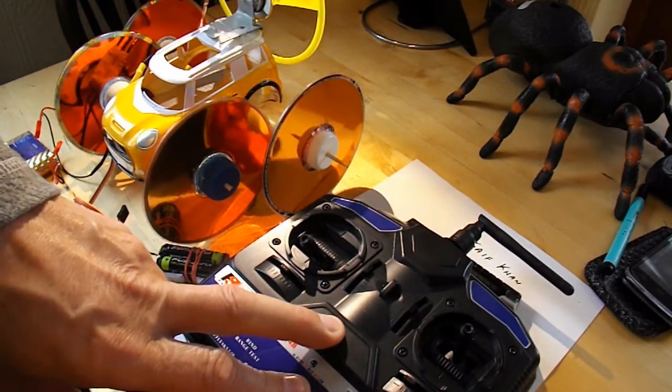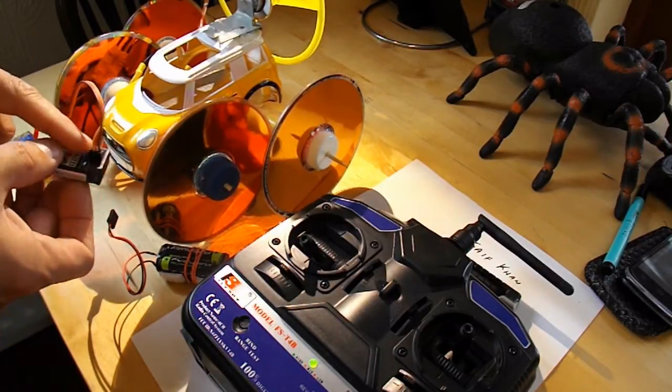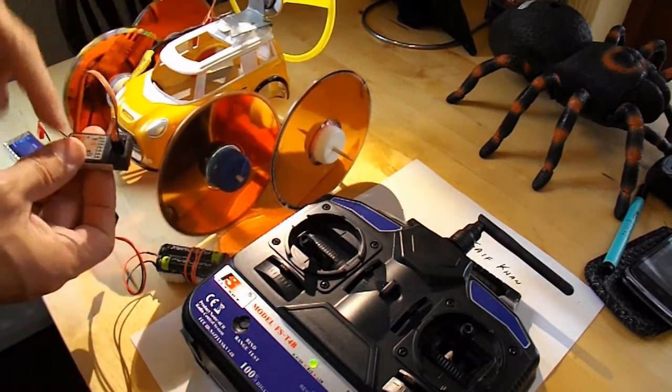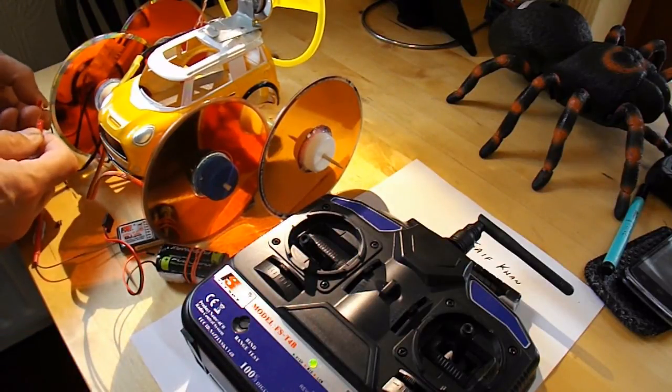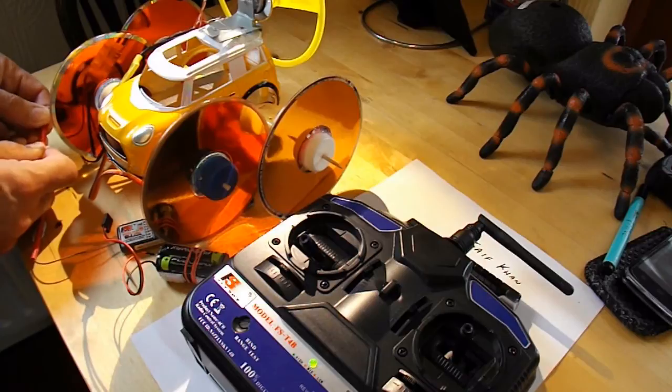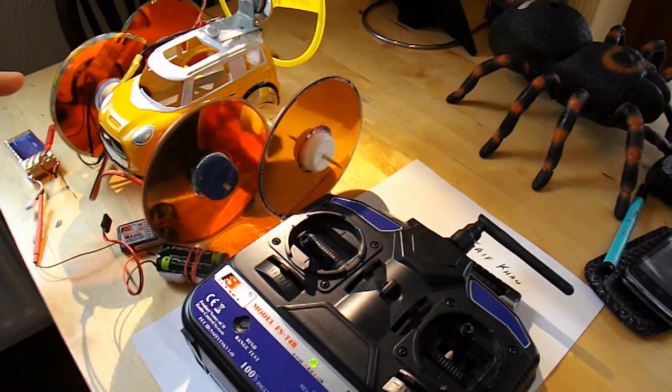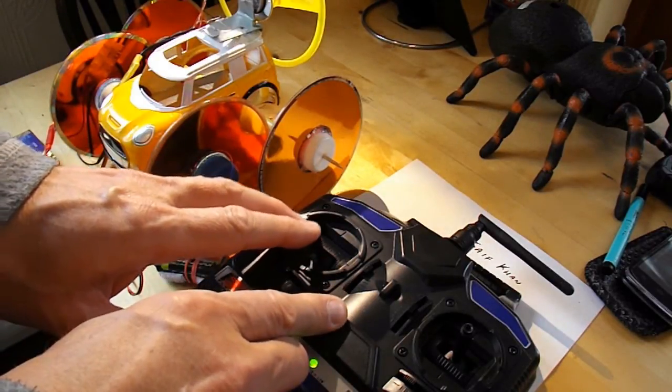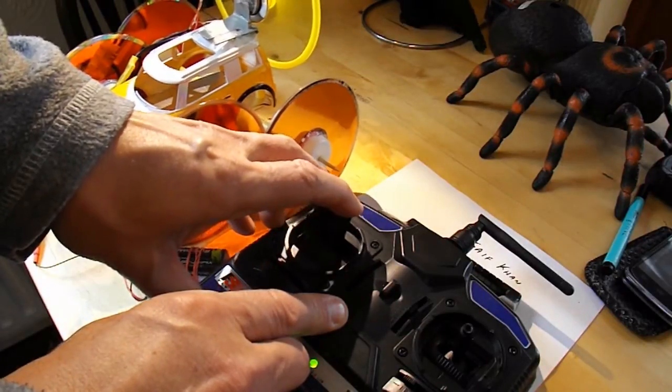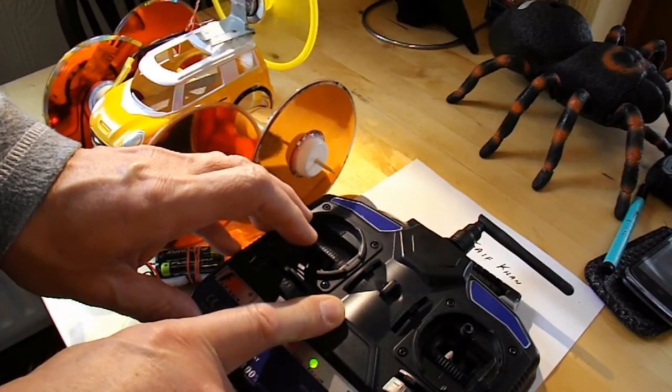It looks to me like... switch on the transmitter. I've got the ESC plugged into the receiver in channel 3. Plug the LiPo battery in. So I've got some nice beeping going on. And it's happy.